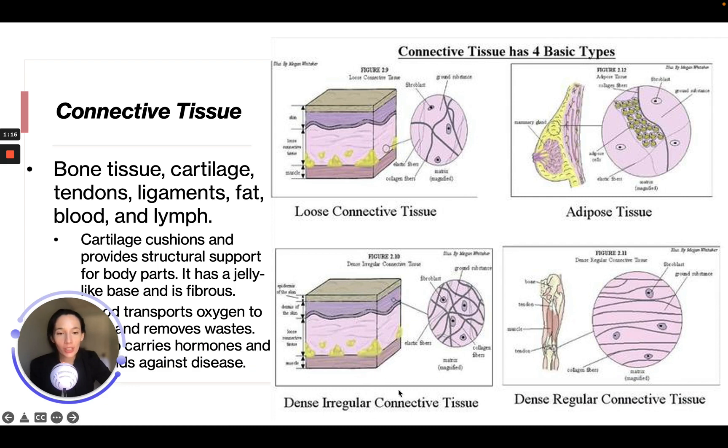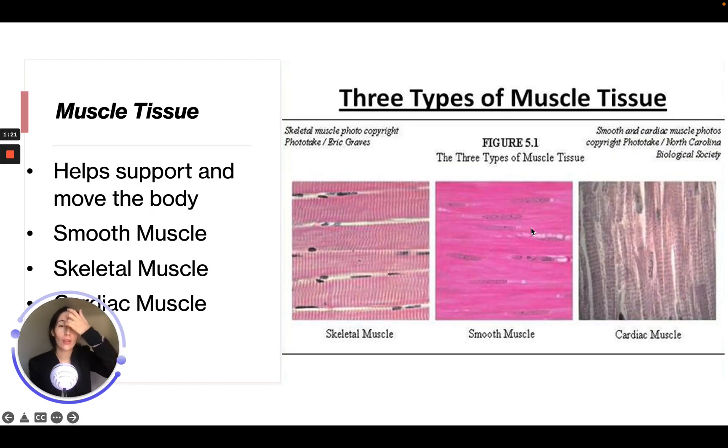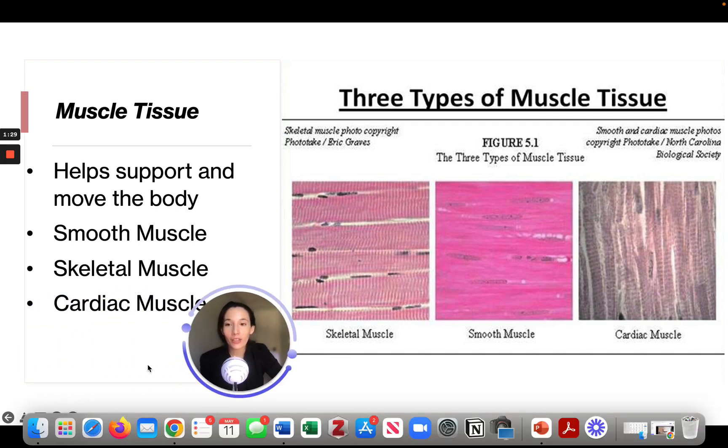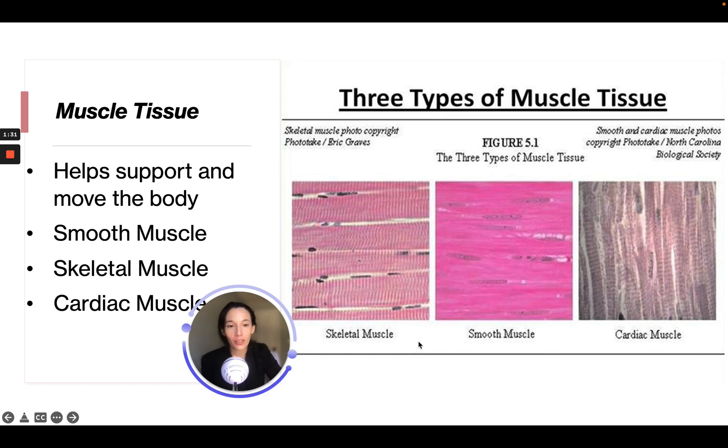Muscle tissue helps support and move the body. There is smooth muscle, skeletal muscle, and cardiac muscle. We can see over here the three different types and how they look different under a microscope.